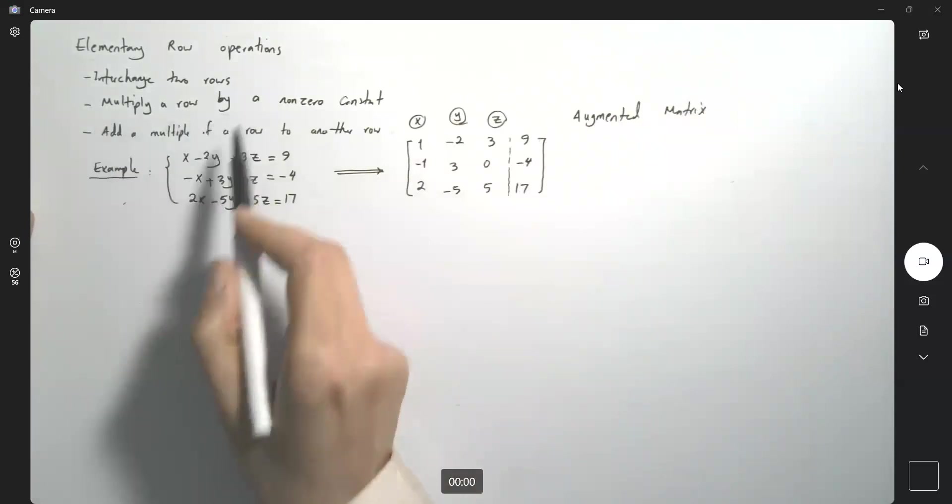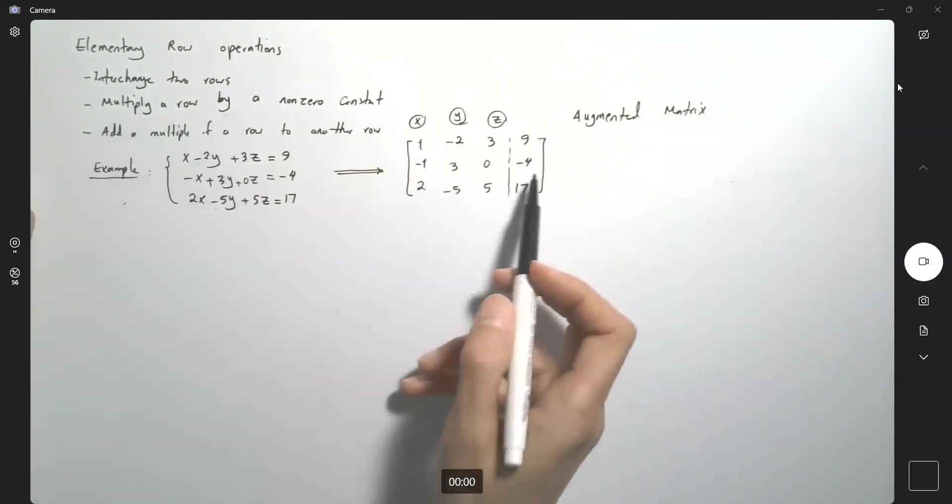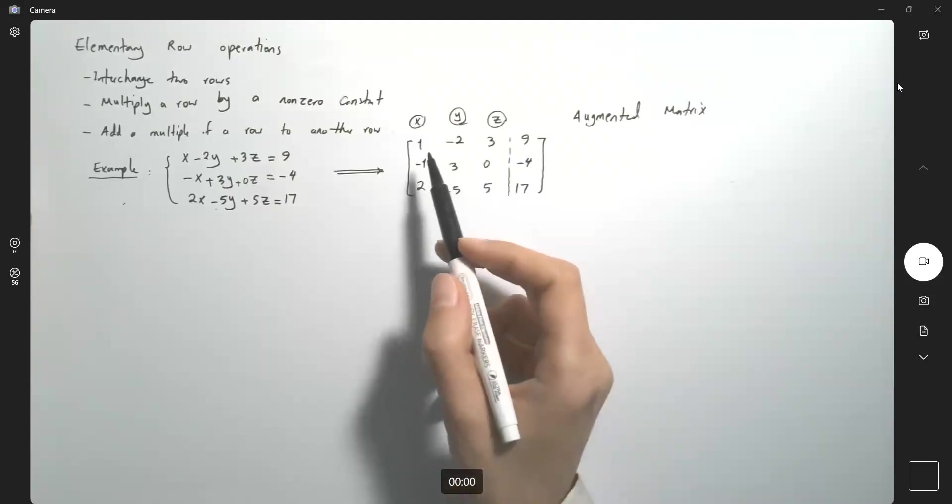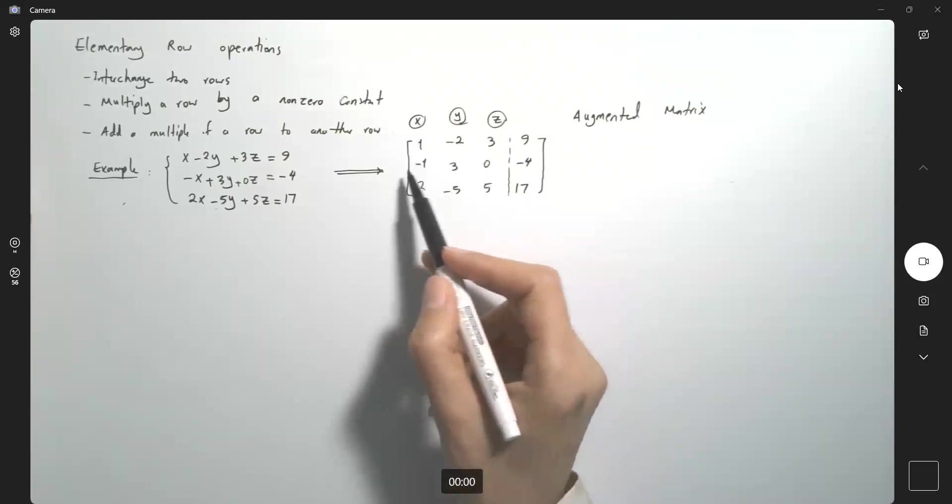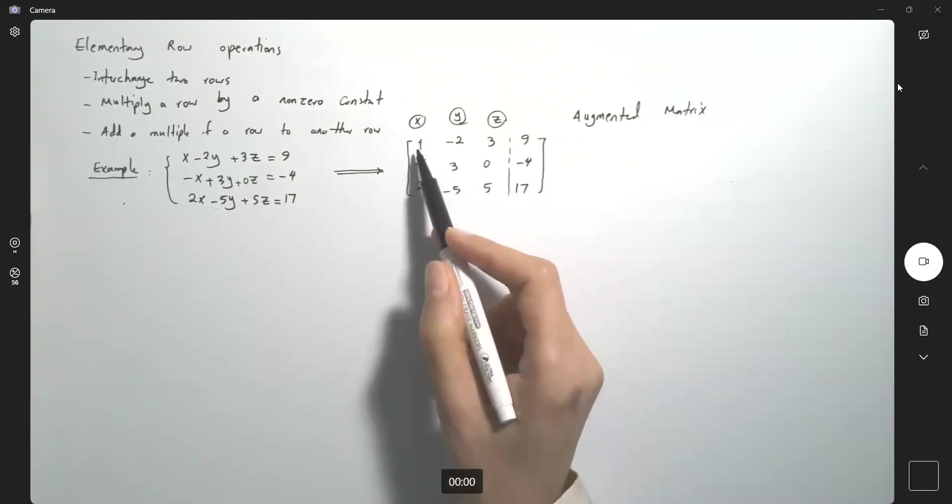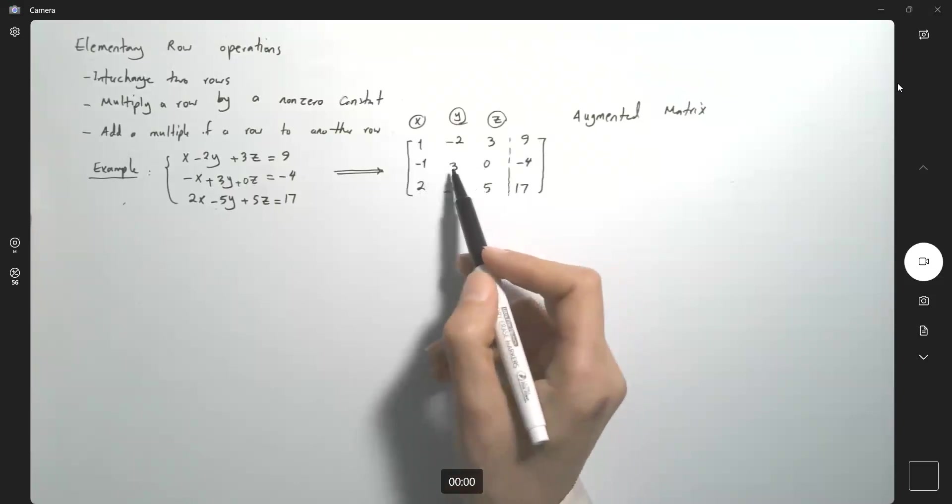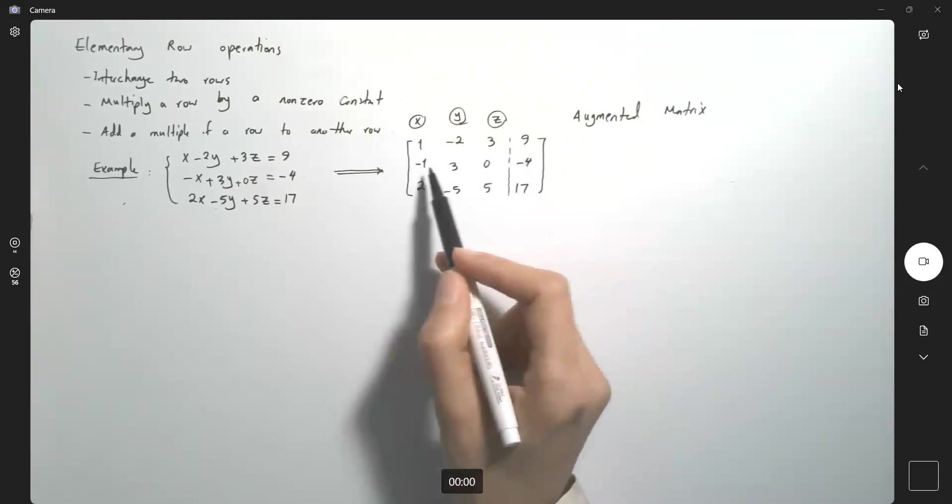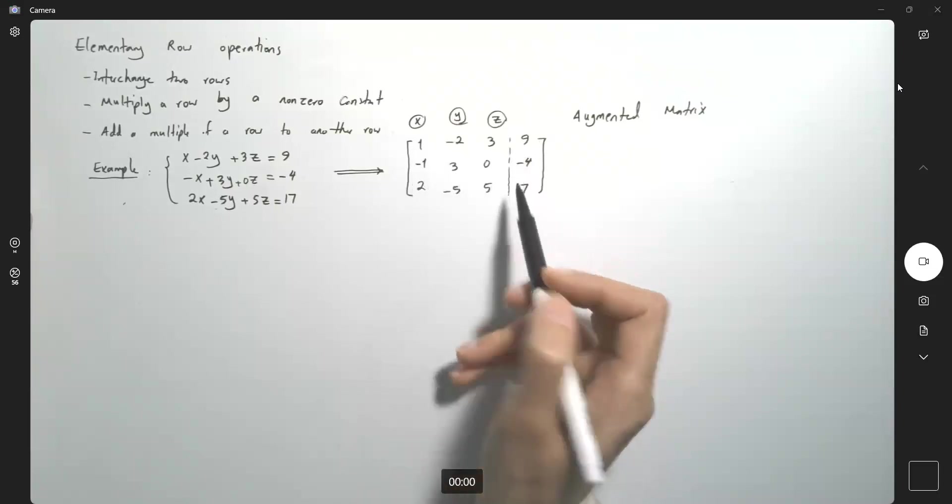I'm going to apply the techniques that we learned to augmented matrix and simplify that as much as we can. So what are we going to do? Let's take a look at these two. We can just add R1 and R2 together, which creates 0, 1 and 3 and 5, and then add that to the second row.